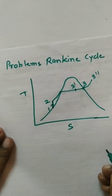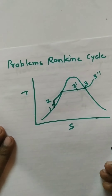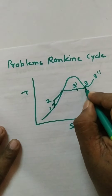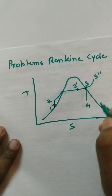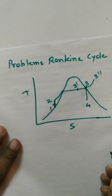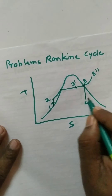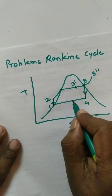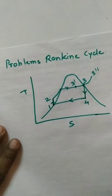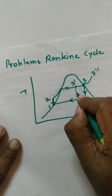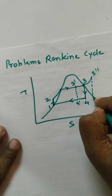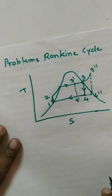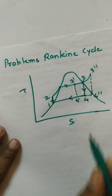The next process is expansion in the turbine, which occurs isentropically. So process 3 to 4 is a vertical line on the T-S plot. After that, the steam goes to the condenser, where condensation occurs at constant pressure from point 4 to 1, completing the cycle. For the 3-dash and 3-double-dash cases, the corresponding point 4 shifts accordingly.